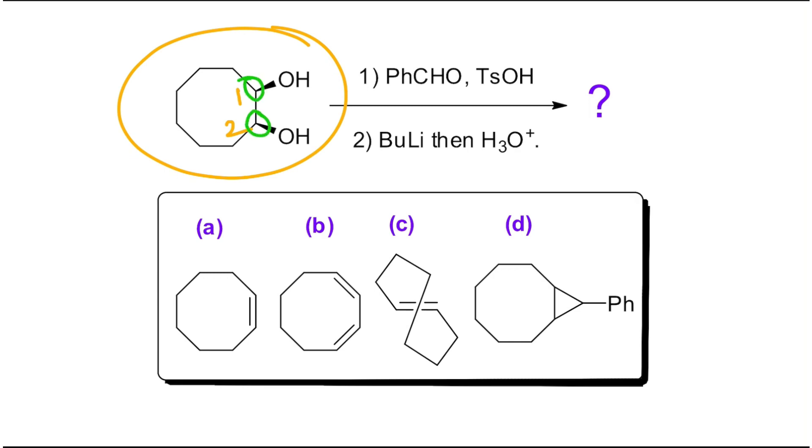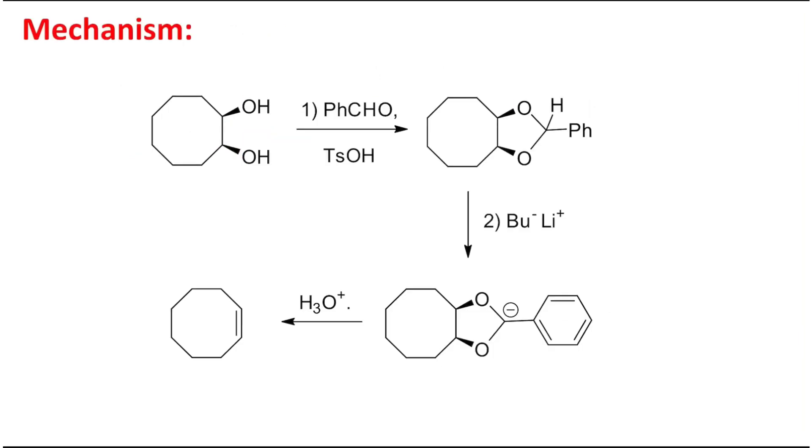Now this molecule is pretty simple. The main concern comes about the steps. Actually, it's a two-step reaction. The first step, if you look at aldehyde and acid, and this is the diol, so what type of reaction? Acetal formation.